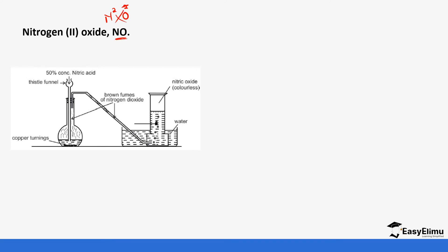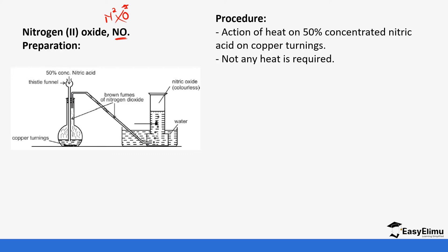This oxide of nitrogen is prepared by reacting 50 percent concentrated nitric acid with copper turnings. It has to be 50 percent—half concentrated, not fully concentrated. No heat is required because we are using a concentrated acid. The reaction will start on its own. When copper reacts with this dilute nitric acid it forms copper nitrate plus water plus nitrogen (II) oxide.